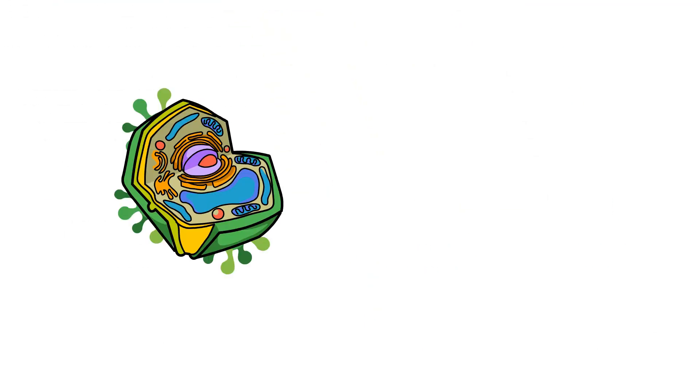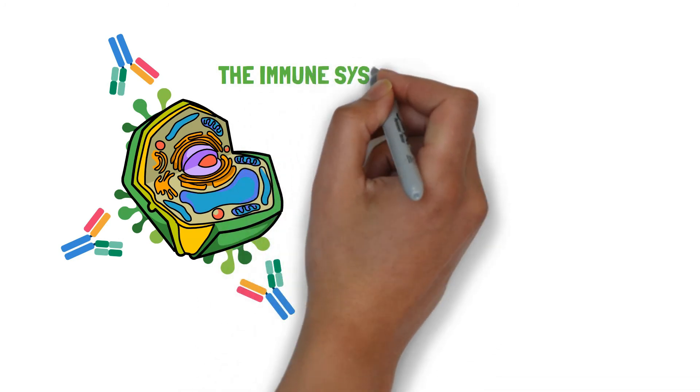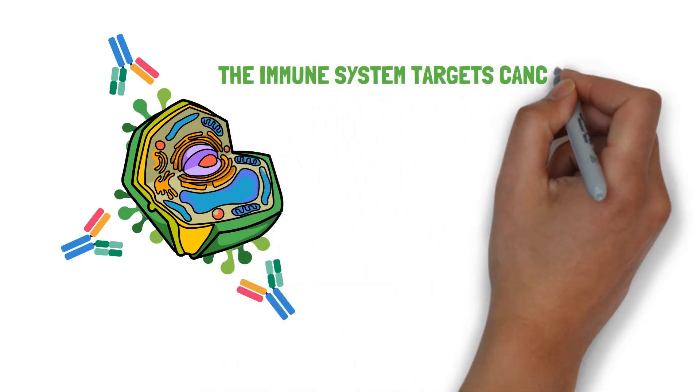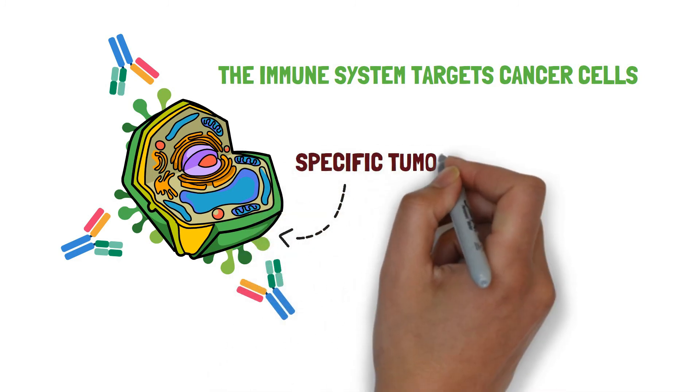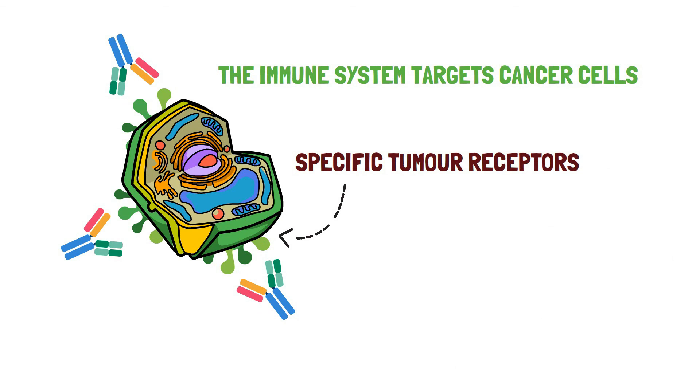But how does the immune system know what to target? Actually, the immune system can target cancer cells because these cells have tumor receptors on them which are detected by special antibodies that work against cancer cells only.